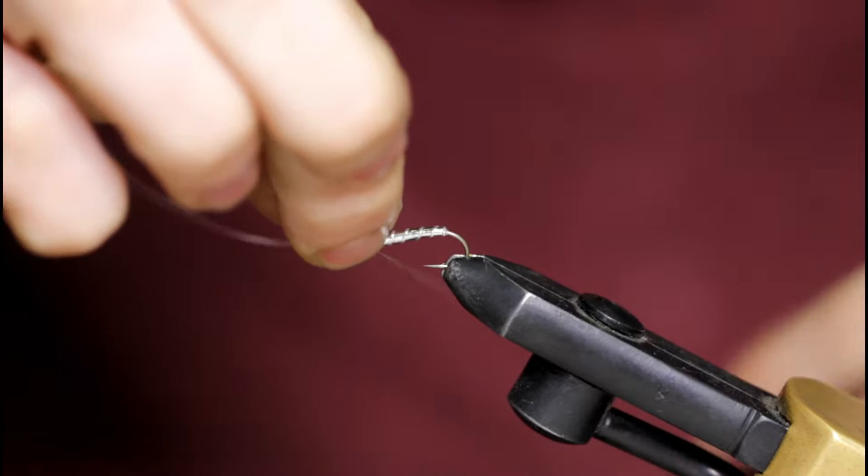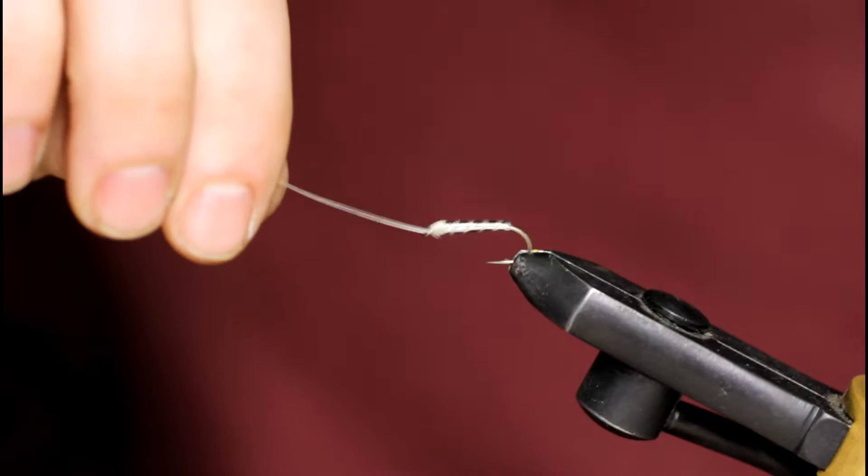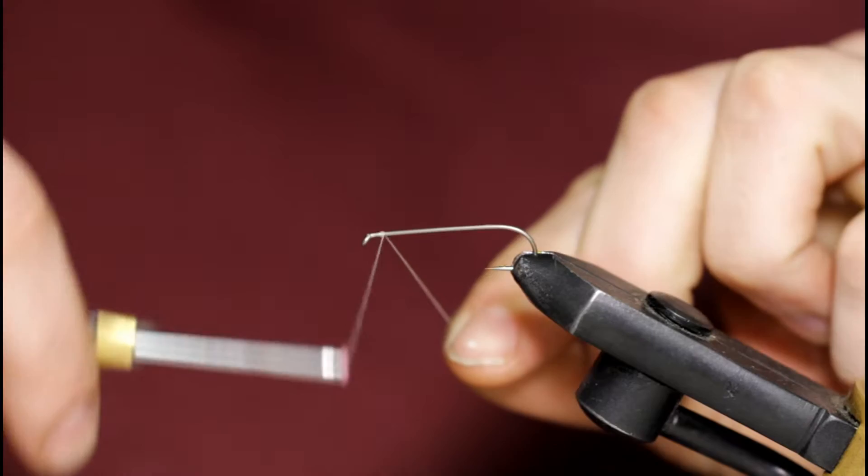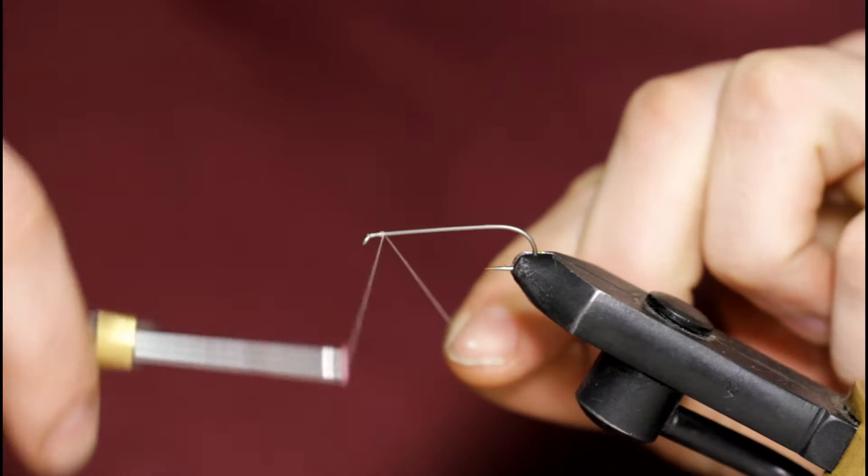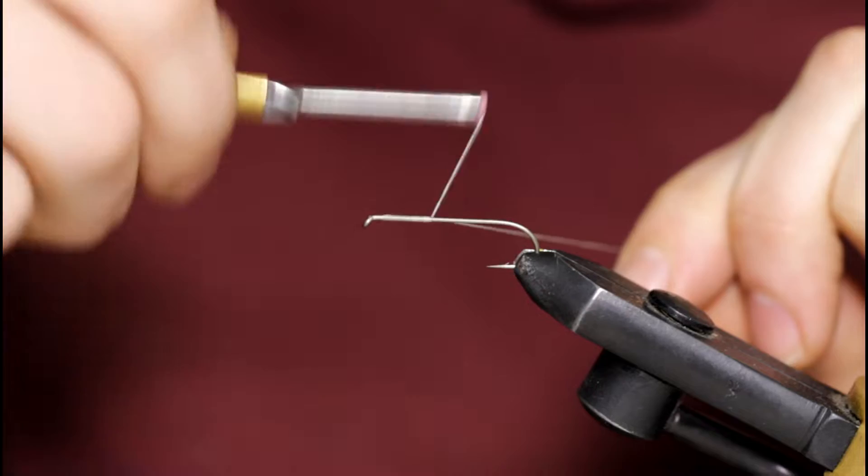Alright, now time to move on to the front hook here. So I've got my size 6 nymph streamer hook in the vise. I'm going to start some white thread here, and you can see I've left a little bit of space here. If you have trouble crowding the hook eye, that's a good idea to not start so close to it.